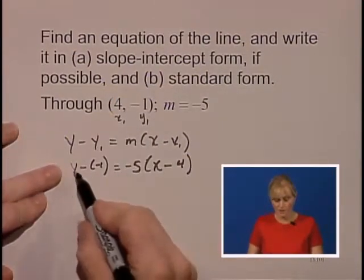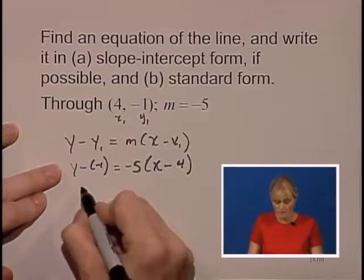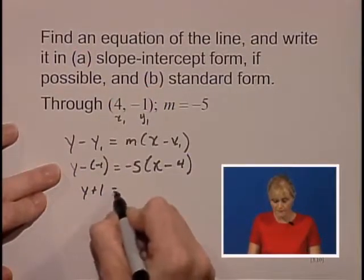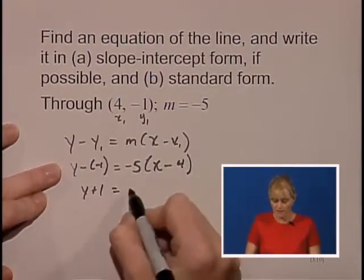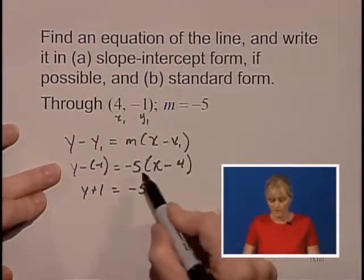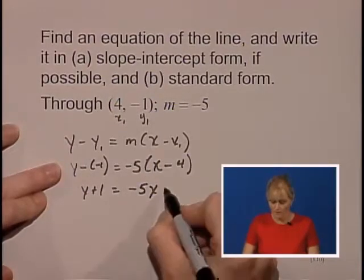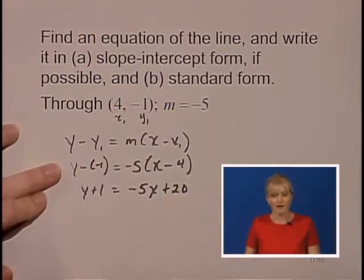Let's clean up both sides. y minus negative 1 becomes y plus 1. Let's do some distributive property on the right. Negative 5 times x is negative 5x, negative 5 times negative 4 is positive 20.